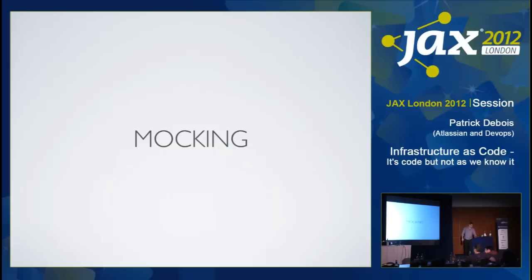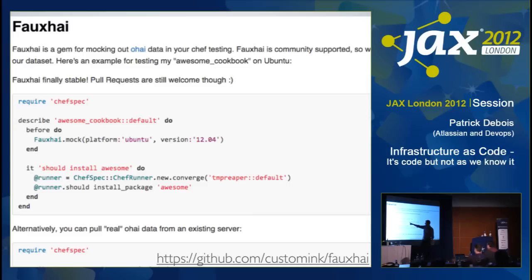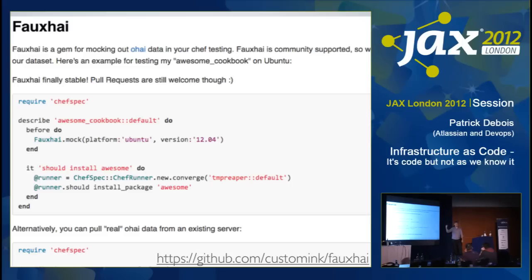If you have tests, it's nice to have mocking. I showed you the example of the facts before — it's kind of mocking, saying the system has these facts, assume that you're going to run this. Chef has another one where you say: mock the platform. So depending on the platform, you want your code to do different things. I personally would want way more mocking — at the network layers, HTTP layers, and so on — but this is the level that we're at.